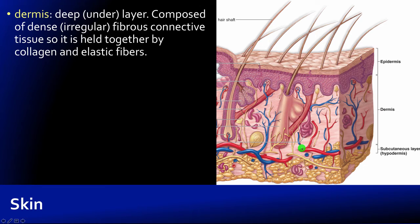The deep layer of the skin, underneath the epidermis, is simply called the dermis. It's composed of dense irregular connective tissue. Since this is dense irregular, it means the collagen fibers go in all kinds of different directions, meaning that the dermis is tough but not as tough in one particular direction as something like a tendon or ligament might be.